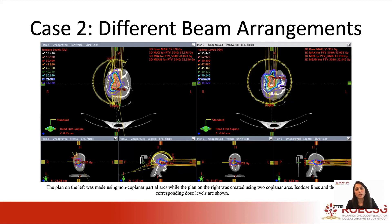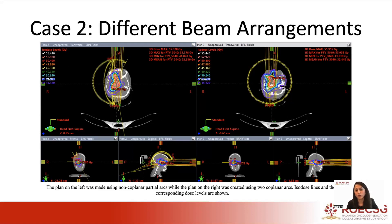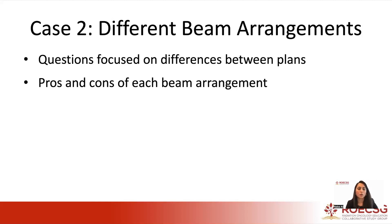The second case was trying to identify different beam arrangements. Two plans were created for one test patient receiving adjuvant radiation for a low-grade glioma. The plan on the left was created using non-coplanar arcs, while the plan on the right used coplanar arcs. The left plan has a little more low-dose spill in the superior-inferior direction, while the right plan has more low-dose spill radially. Depending on the clinical scenario, one beam arrangement might be more beneficial. Questions were focused on the differences between plans and pros and cons of each beam arrangement.